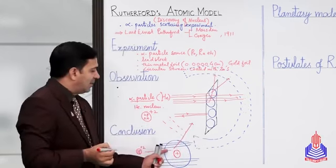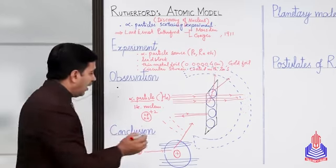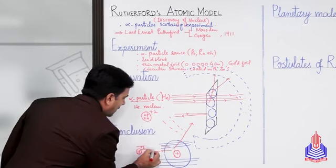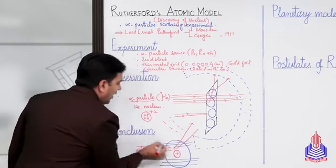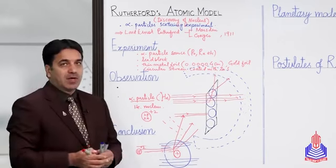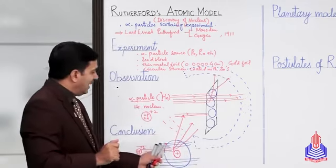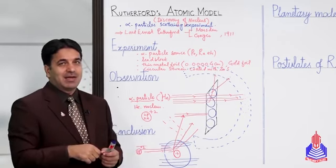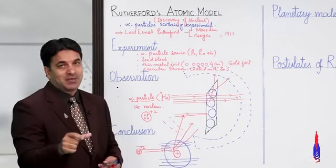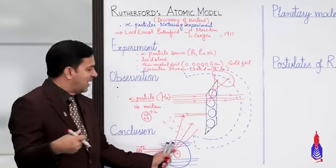Alpha particle کی نہ صرف direction change ہوئی بلکہ اس کی velocity بھی change ہوئی۔ جو alpha particle nucleus سے دور سے گزرے وہ کم deflect ہوئے، اور جو قریب سے گزرے وہ زیادہ deflect ہوئے۔ Large deflection سے ہمیں یہ convince ہوا کہ ایٹم کے center میں ایک massive object ہے اور اس پر positive charge ہے۔